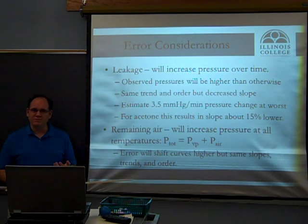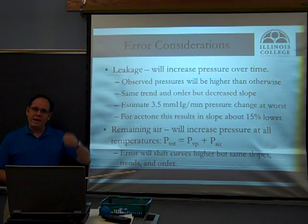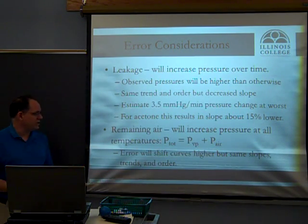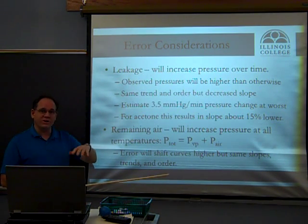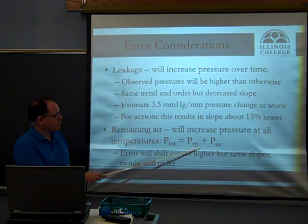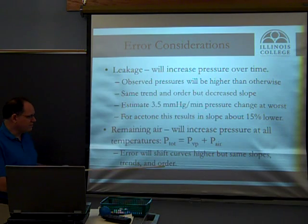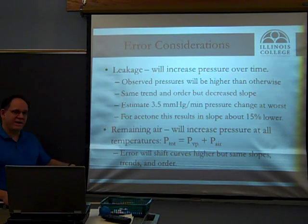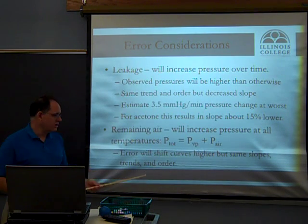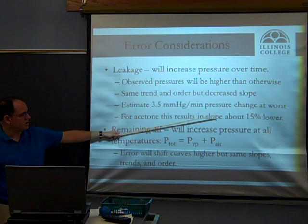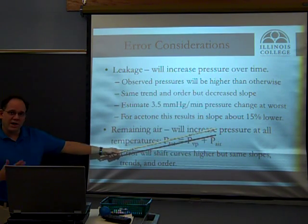The other potential issue is not pumping out all the air initially. If some air remained, it would increase the pressure at all temperatures — air wouldn't condense, so that gas would simply stay there. The total pressure would be the vapor pressure of the liquid, which decreases with temperature as it condenses, plus the constant pressure contribution from the residual air. This would shift the curves higher on the graph — changing the intercept effectively — but the slopes would remain the same. The trends and ordering would be preserved, and the ordering is what tells us about intermolecular forces: acetone has the weakest, then methanol, then hexane with the strongest.